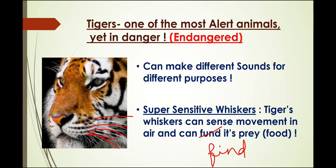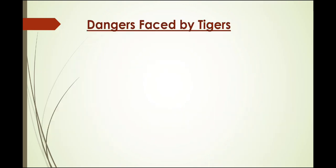So in spite of having so many super senses, why are tigers in danger? Because the number of tigers is decreasing — there are only 2,226 tigers left in India. If we don't save them, after a few years all the tigers will disappear and future children won't be able to see tigers. Just like we see dinosaurs only in pictures and movies now, future children will also see tigers only in pictures and movies. Tiger is our national animal, so it is our duty to save them.